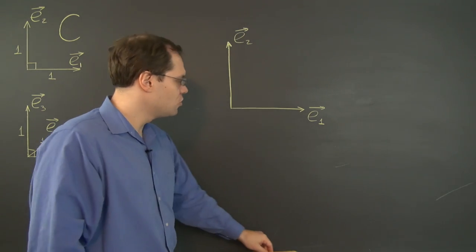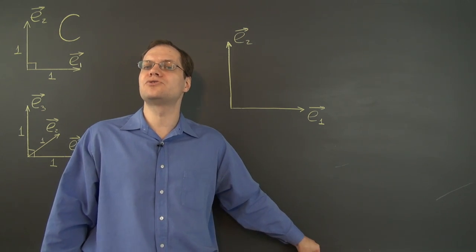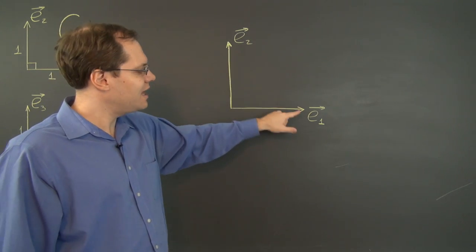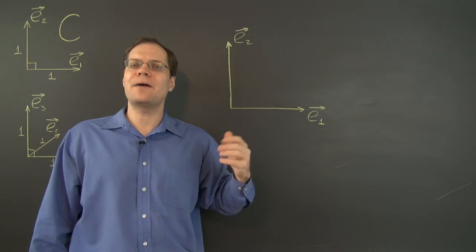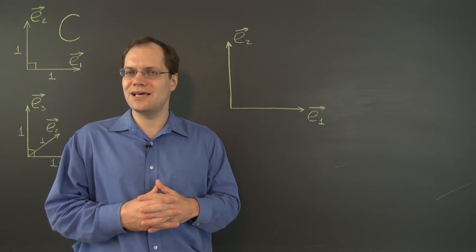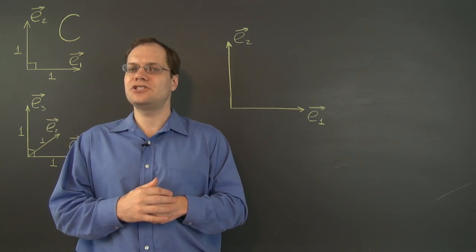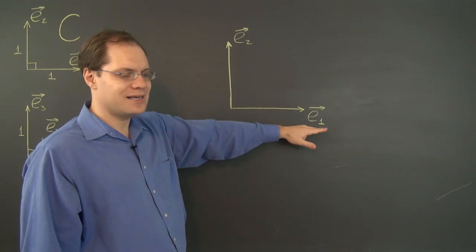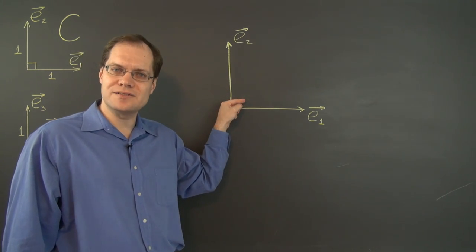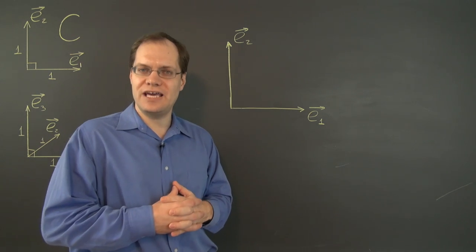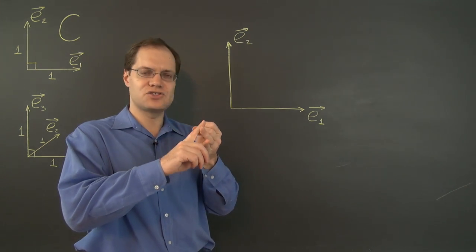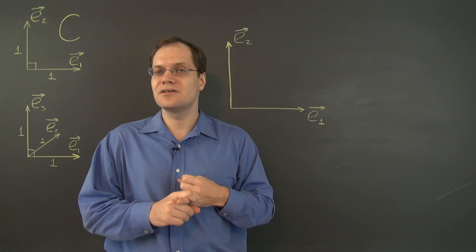Keep that in mind. What would happen if we switched the two vectors — they remain in place, but we now call this one e1 and this one e2? The orientation changed again. If this is now e1 and this is e2, the shortest distance from e1 to e2 is clockwise. So switching two vectors also changes the orientation.